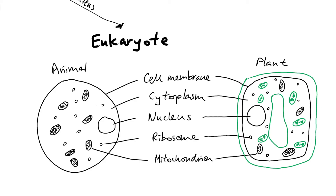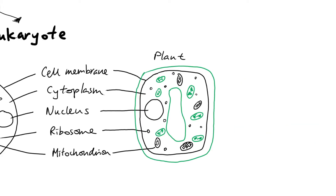These five organelles are common to both animal and plant cells. Now we'll look at three specific organelles found in plant cells but not in animal cells. First is the outermost layer — the cell wall. The plant cell wall is made up of a chemical called cellulose, which makes it different from the cell wall found in bacterial cells. The cellulose cell wall maintains the shape of the plant cell.